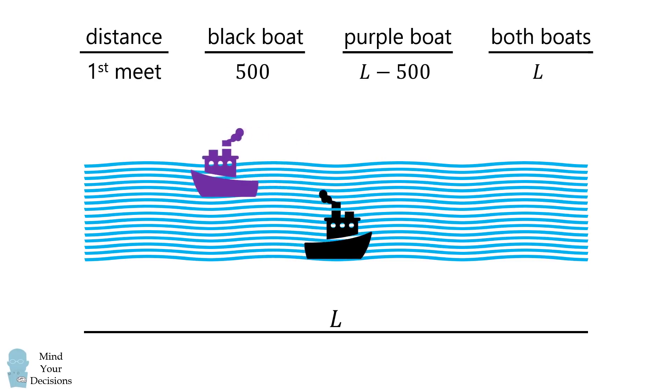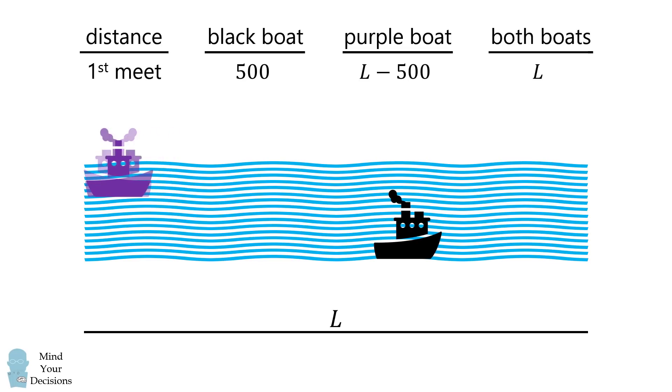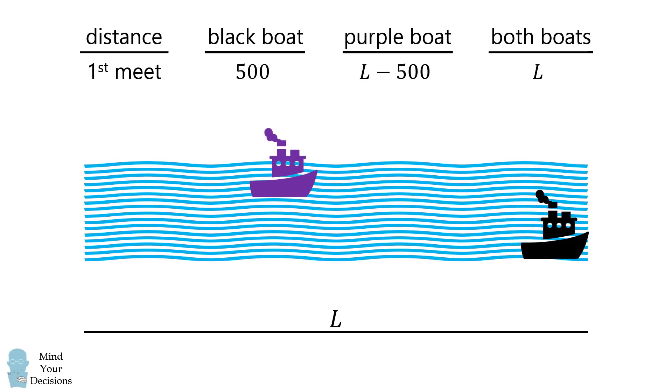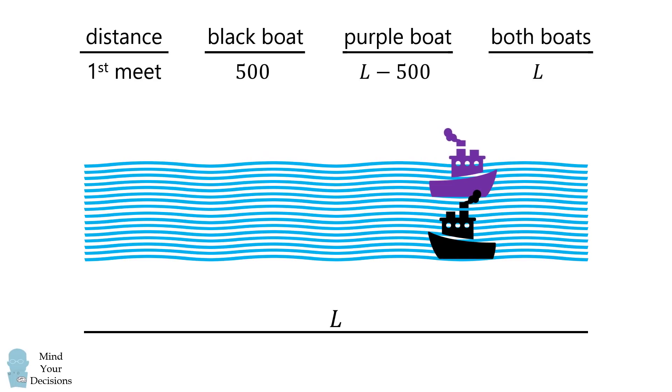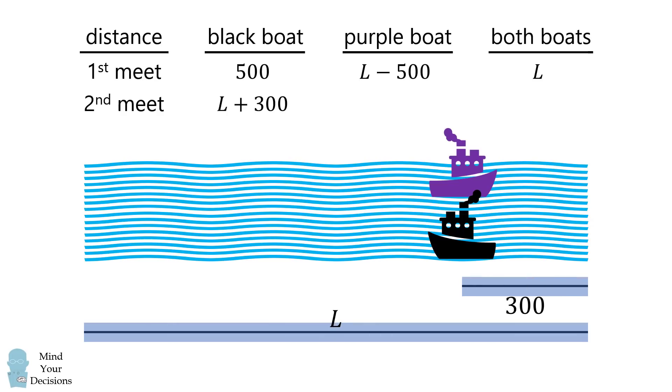We'll do a similar calculation for the second meeting, which is 300 units from the right shore. The black boat has traveled L plus 300. The purple boat has essentially made a round trip but is short by 300 units, so it has moved 2L minus 300. Adding these distances, the total distance by both boats equals 3L.